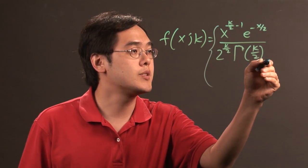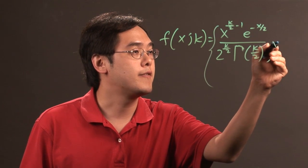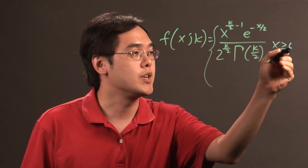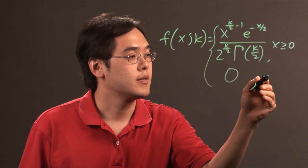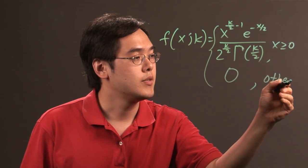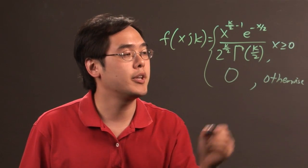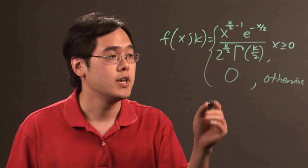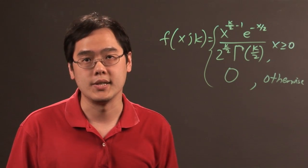Now, this is of course if x is greater than or equal to 0. The probability distribution function is going to be 0 otherwise.